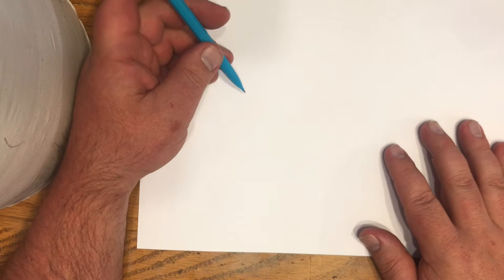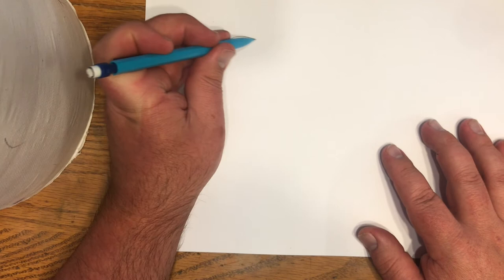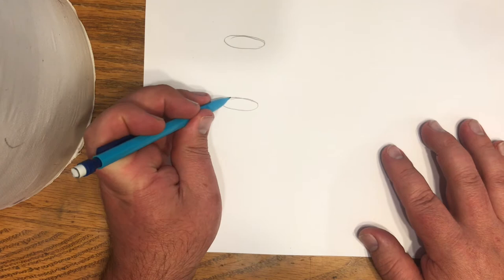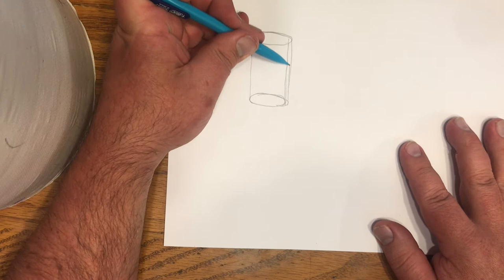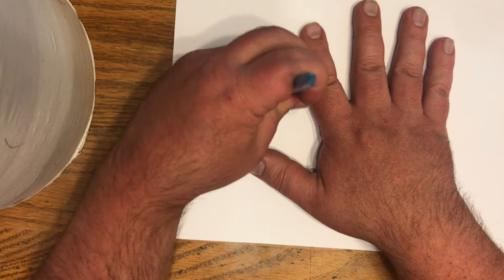So remember the last video, I taught you how to draw a cylinder by doing an ellipse, an ellipse, and then connecting them together. And erasing the back curve for the solid form, doing the top here.